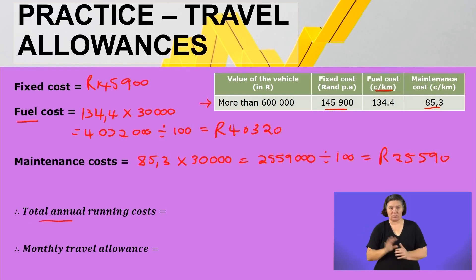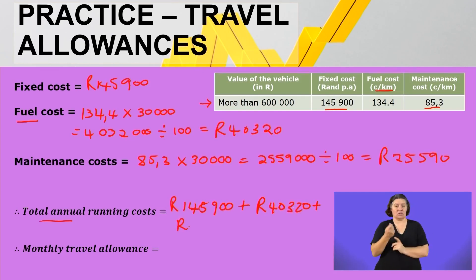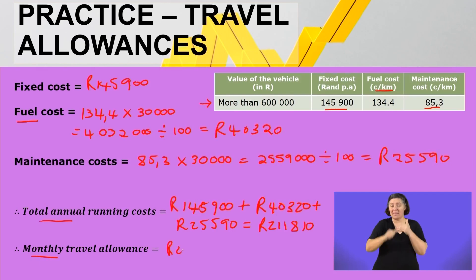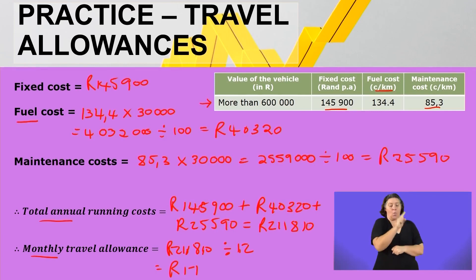So what is the total annual running cost? You take fixed cost 145,900 rand, plus fuel cost 40,320 rand, plus maintenance cost 25,590 rand. That gives you 211,810 rand per year. To get the monthly travel allowance, divide 211,810 by 12 months, giving a monthly travel allowance of 17,650 rand and 83 cents.